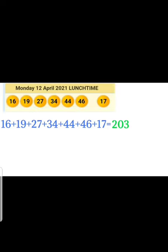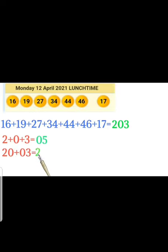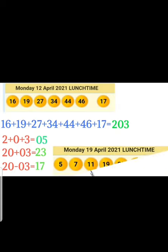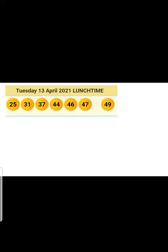Now let's break it: 2 plus 0 plus 3 equals 5 — that's our first number. Then 20 plus 3 equals 23. It's simple to break, as you can see. There you have your three numbers for Monday 19 April lunch time. Five came — it works! Sometimes you can even get two numbers.